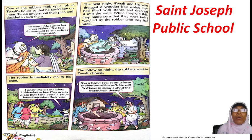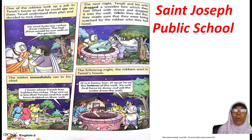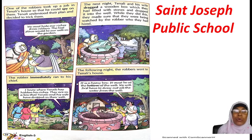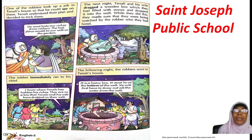The next night, Tenali and his wife dragged a wooden box which they had filled with stones and dropped it into the well. While they did this, they made sure they were being watched by the robber they had hired. By the picture you can see the robber is behind the tree, and Tenali is quite sure that robber is spying them — watching what Tenali and his wife are doing as they put the big wooden box into the well. The box was filled with stones.